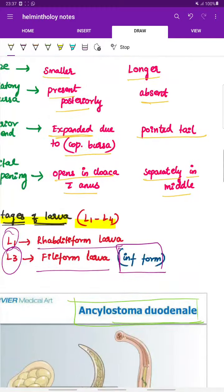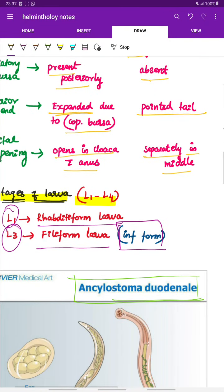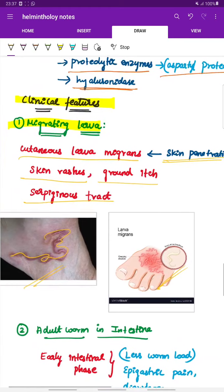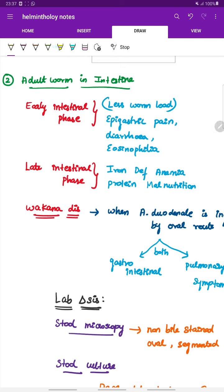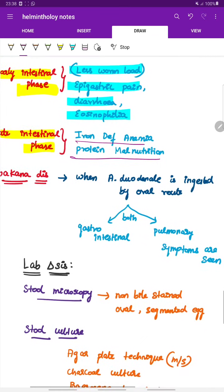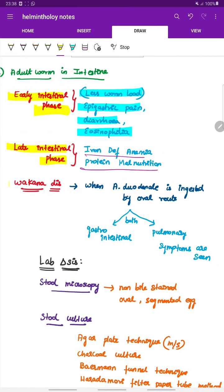Next, the clinical manifestations due to the adult worm in the intestine. In the early intestinal phase, there is less worm load so there is only epigastric pain, diarrhea, and eosinophilia. Whereas in the late intestinal phase, the worm load increases, due to which there is iron deficiency anemia and protein malnutrition seen.